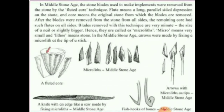Flute means a long parallel-sided depression on the stone, and core means the original stone from which the blades are removed. After the blades were removed from the stones from all sides, the remaining core had such flutes on all sides. Blades removed with this technique are very minute — minute means small — the size of a nail or slightly bigger. Hence they are called microliths. Micro means very small and lithos means stone.